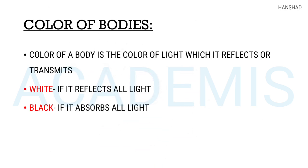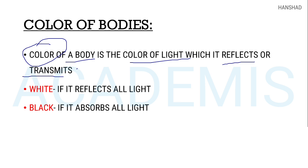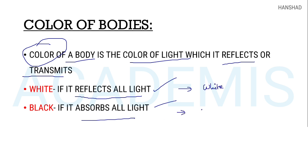The color of a body is the color of light which it reflects or transmits. If the body absorbs all colors and reflects none, it appears black. The color seen depends on which wavelengths of light the body reflects or transmits.